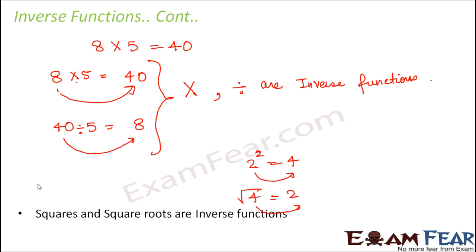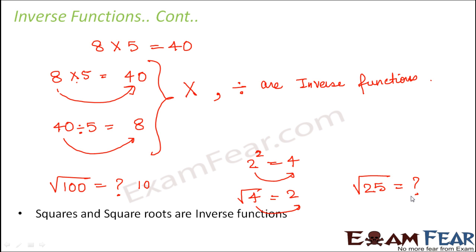For example, square root of 100 should be that number which when multiplied by itself gives 100. That number is 10, because 10 × 10 = 100. Similarly, what is the square root of 25? You need a number which when multiplied by itself gives 25. The answer is 5, because 5 squared equals 25 — 5 multiplied by itself gives 25. This is square root.